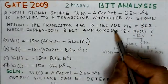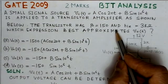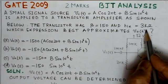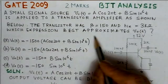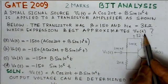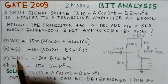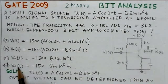The transistor has β = 150 and h_ie = 3 kΩ. Which expression best approximates V_o(t)? There are four options given and we have to identify which is the right option.